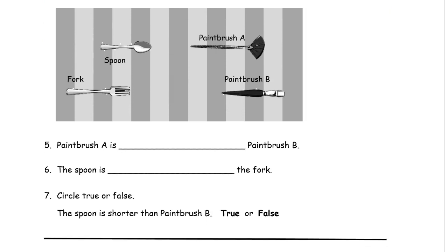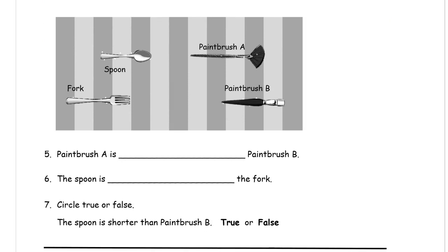Here we have a picture for these questions. Paintbrush A, that's this one here, is it longer or shorter than paintbrush B? Well if we count the bars here there's one, two, three, four. Paintbrush A is four stripes long.